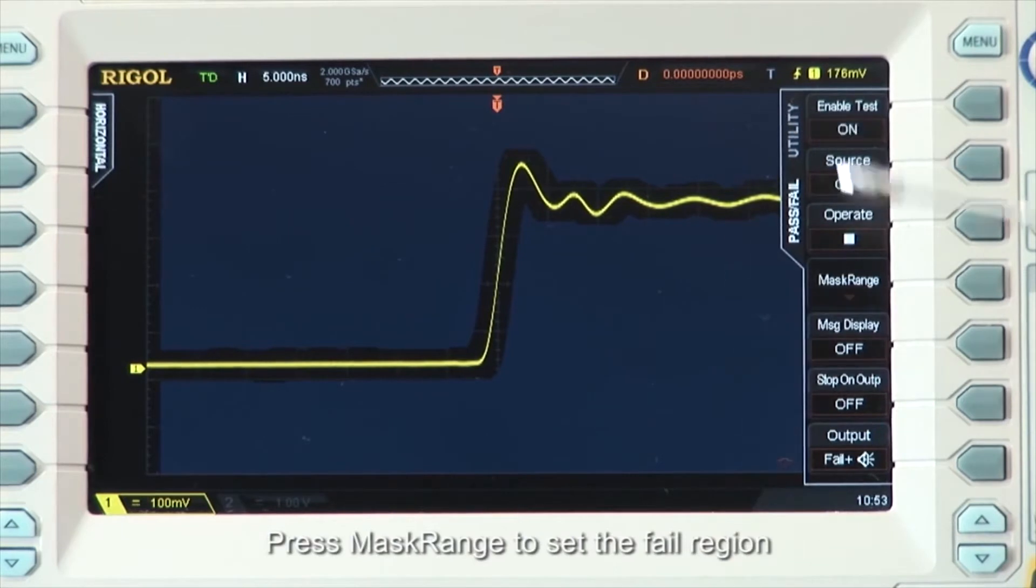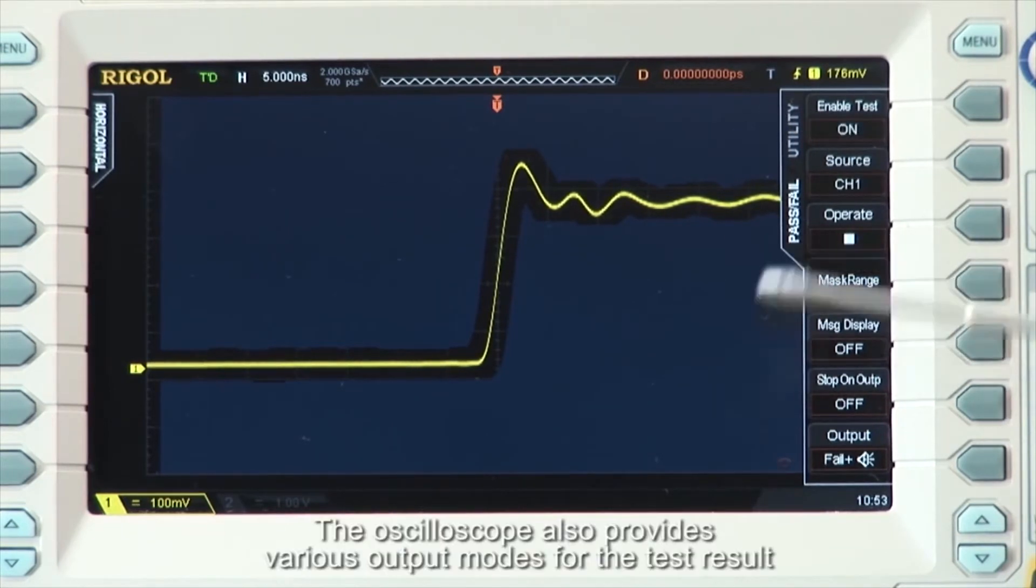Press Mask Range to set the fail region. The oscilloscope also provides various output modes for the test result.